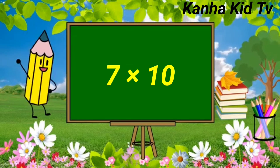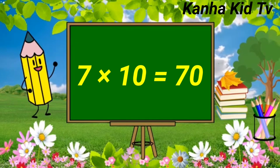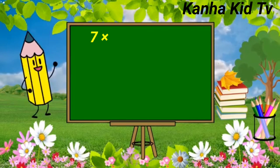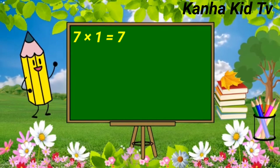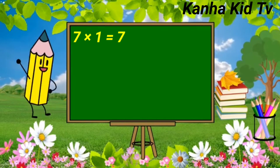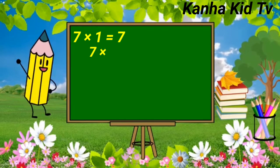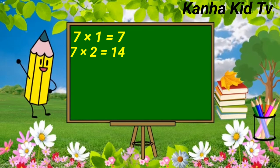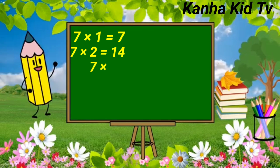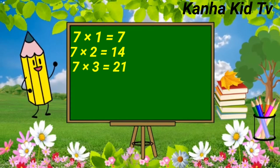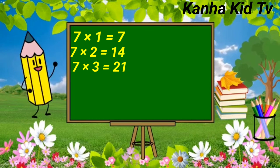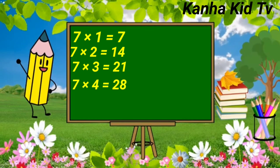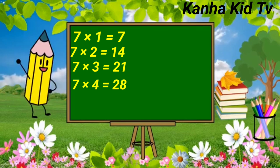7 tens are 70. 7 ones a 7. 7 twos a 14. 7 threes a 21. 7 fours a 28.